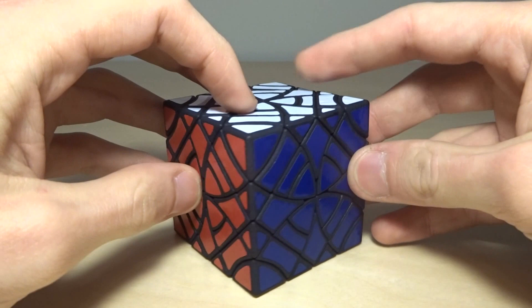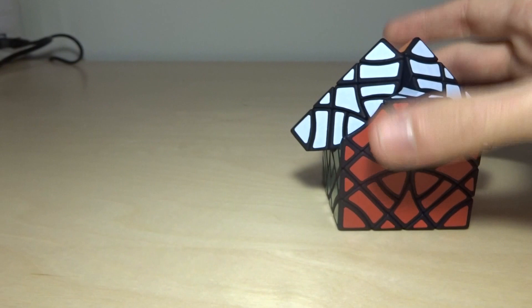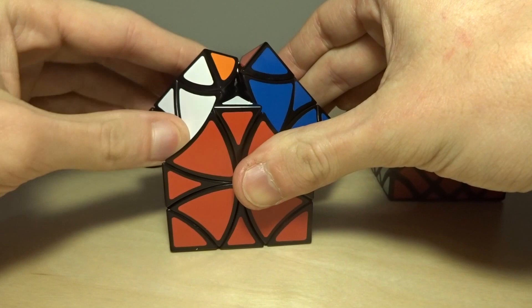Unlike a normal Curvy Copter though, this puzzle can do this move with ease. As you can see, the layers are just sliding past each other with no problem. If you try this on a normal Curvy Copter, what actually happens is the pieces start hitting each other and the puzzle starts pushing pieces out.